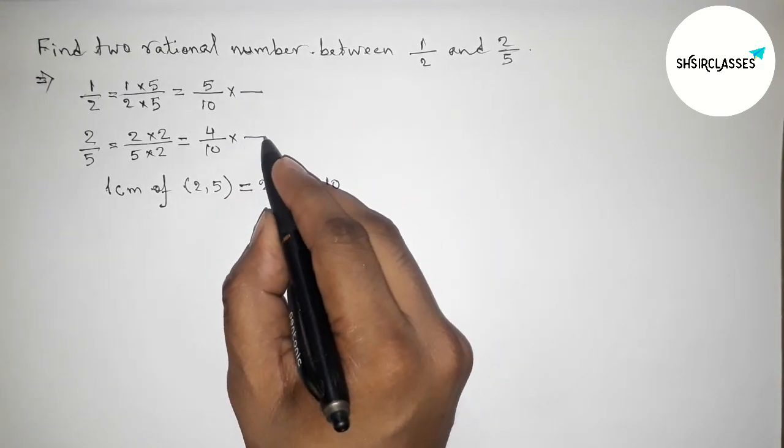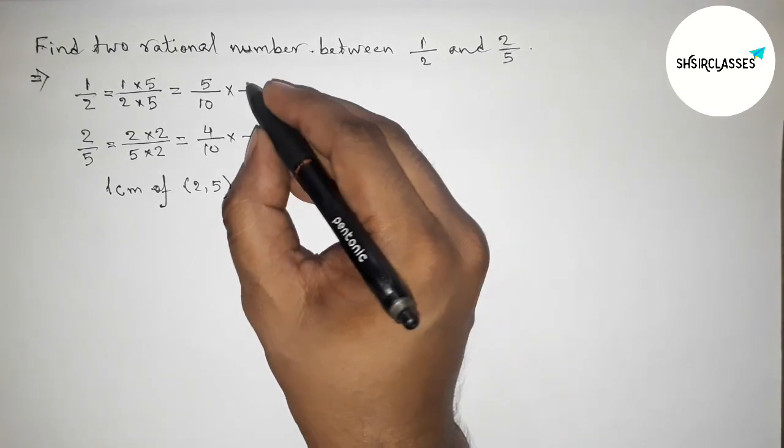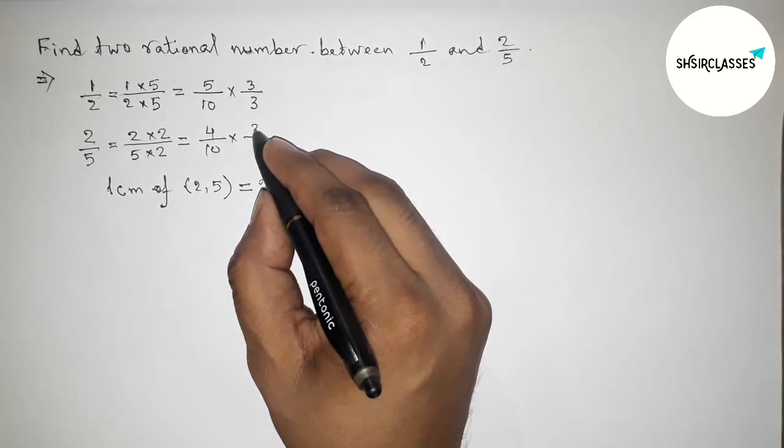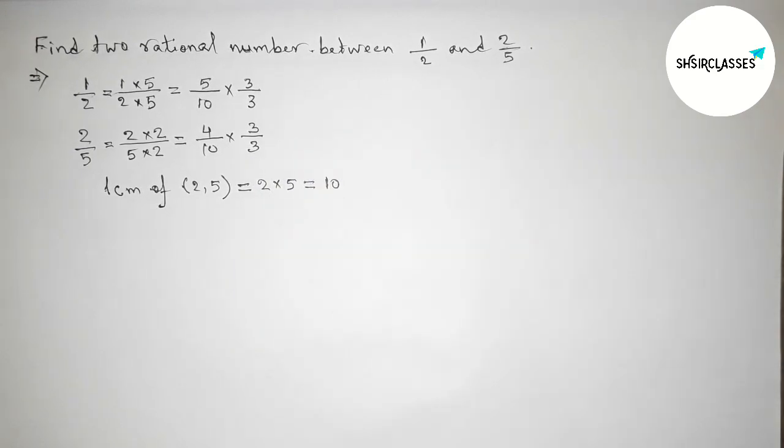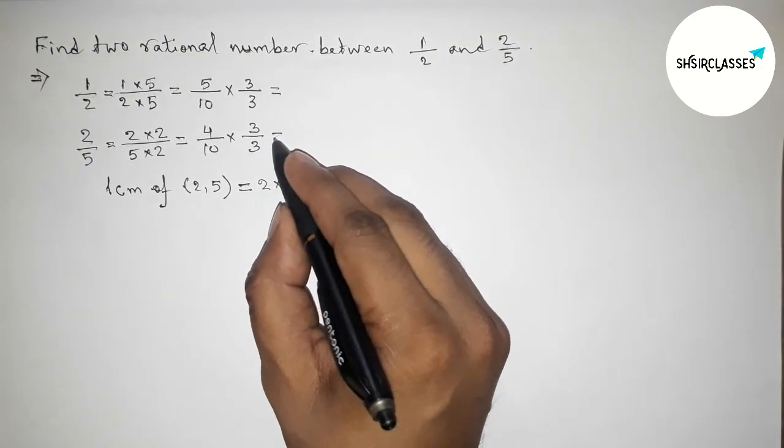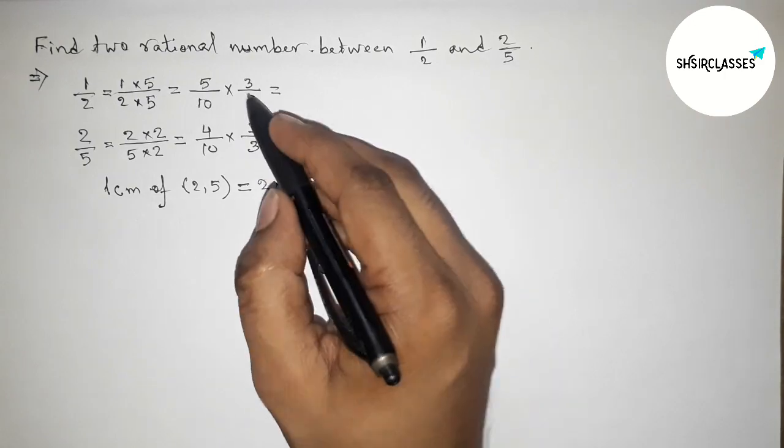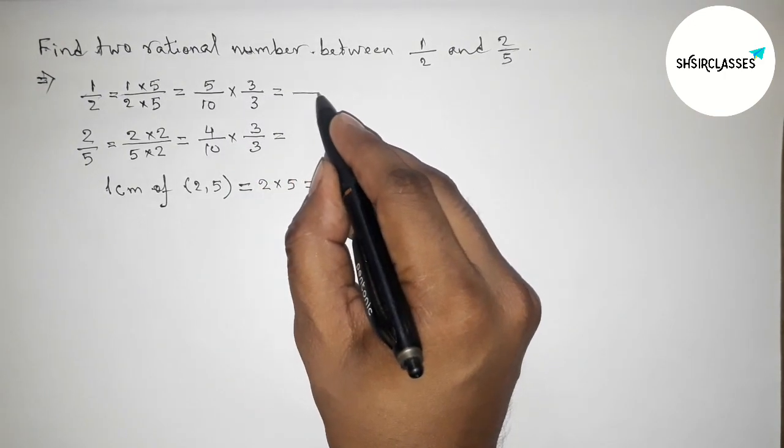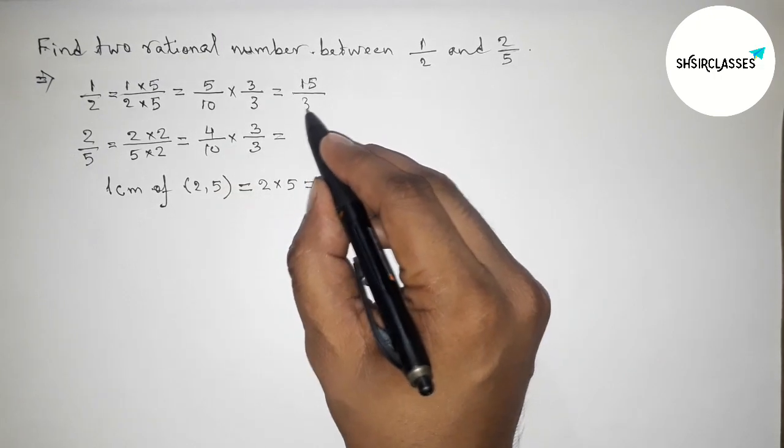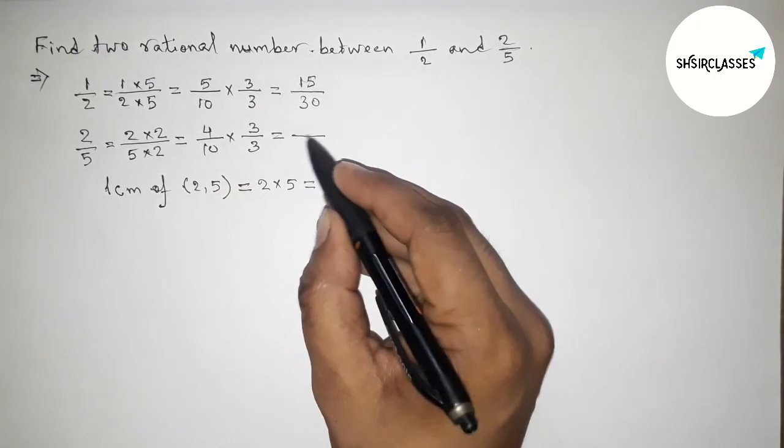So now again we have to multiply both numbers by a number up and down. Now taking here up and down 3, and similarly taking here 3. So now calculating this: first one, this is 5, 3's are 15, and 10, 3's are 30, and this one 4, 3's are 12, and here 10, 3's are 30.